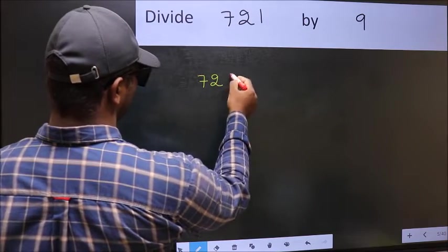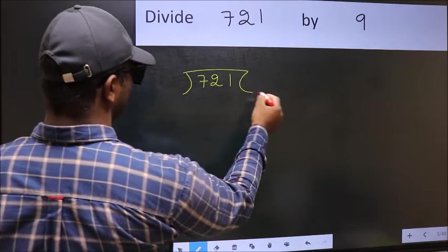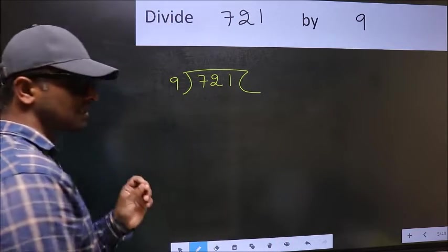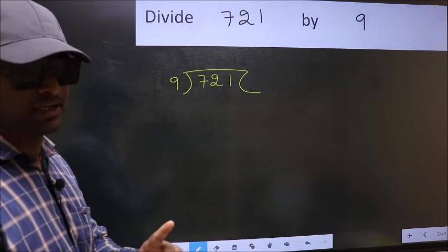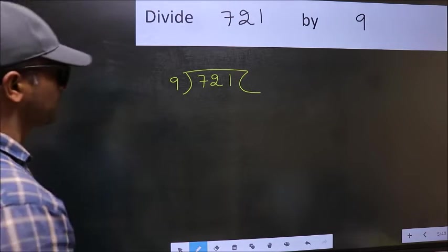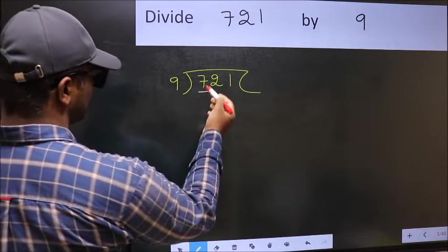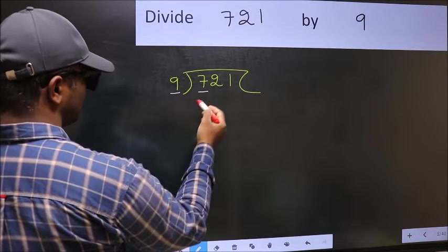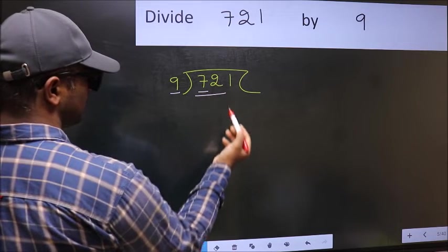721 and 9 here. This is your step 1. Next, here we have 7 and here 9. 7 is smaller than 9, so we should take two numbers, 72.